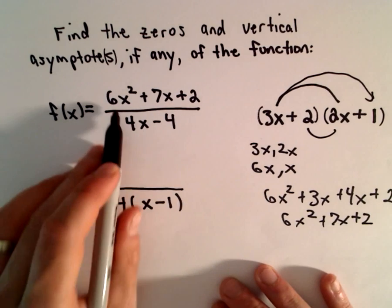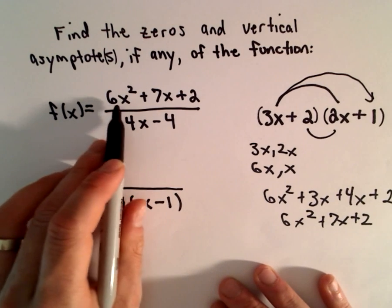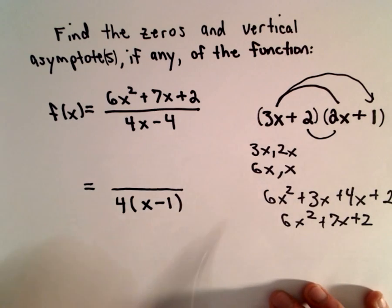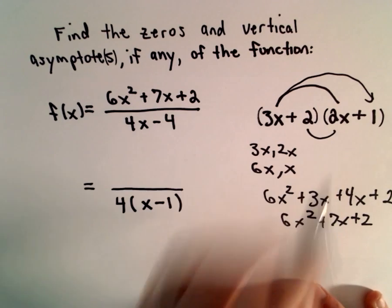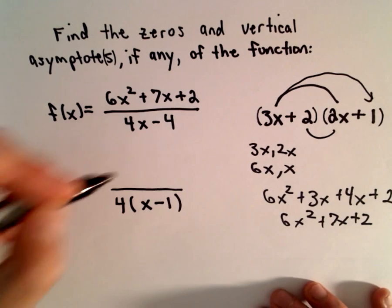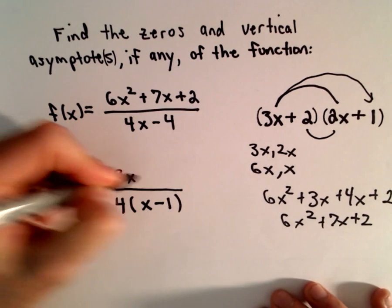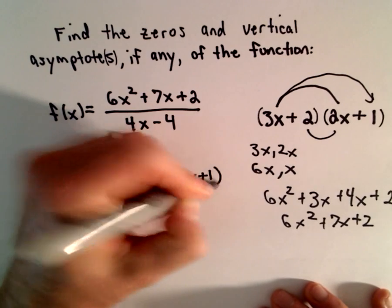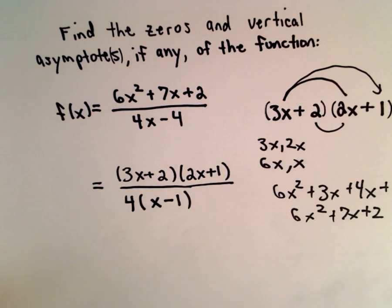Again, factoring quadratics, especially when the coefficient on the x² term is not a positive 1, it can be a little laborious. I think I got a little lucky here and just picked the right ones first. So we've got (3x + 2)(2x + 1) in the numerator.